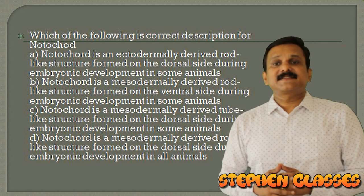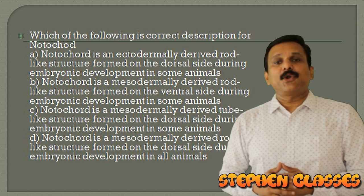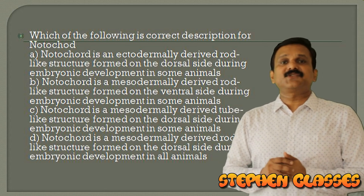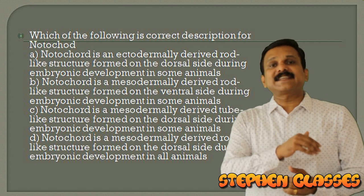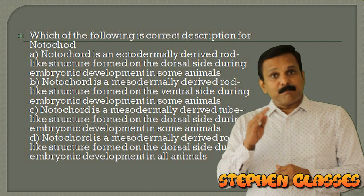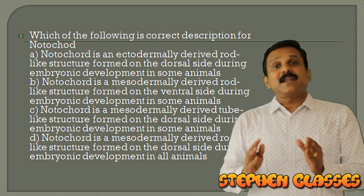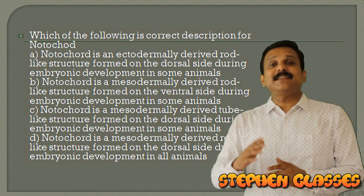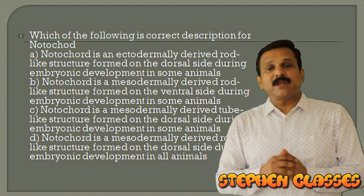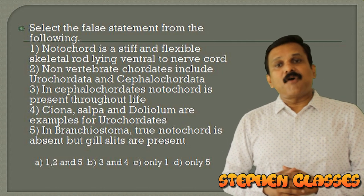The notochord is mesodermally derived — derived from the mesodermal layer. It is a rod-like structure formed on the dorsal side during embryonic development. It is not always present and is found only in some animals. Animals which possess a notochord are called chordates. The correct answer is option D.